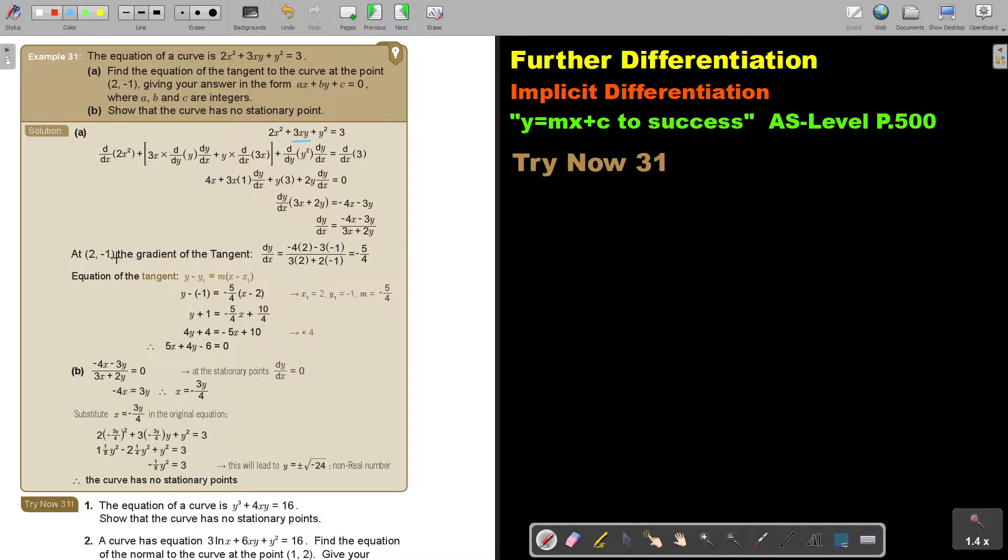Now, at (2, negative 1), the difference is that we now substitute both values. In chapter 6, we only substitute the x value. Now to find the gradient, we substitute the x as well as the y value, because in our differentiated equation is an x and a y.